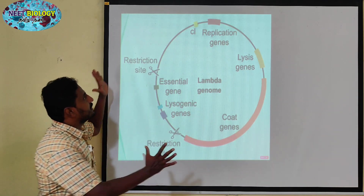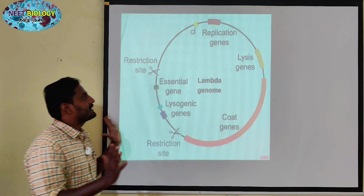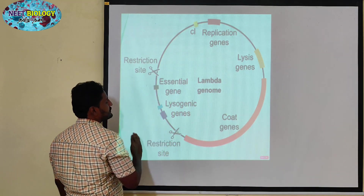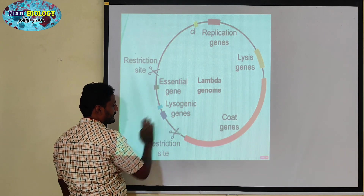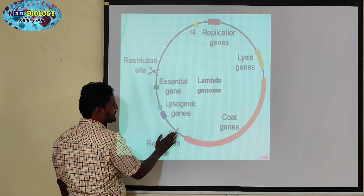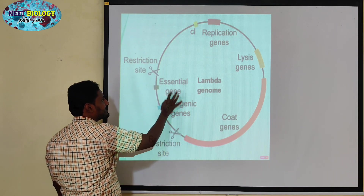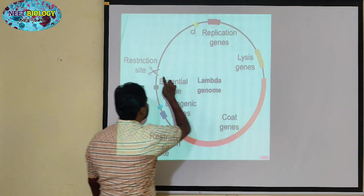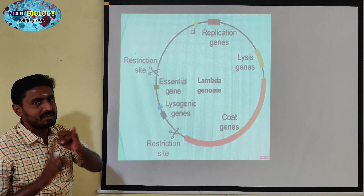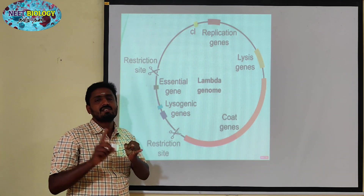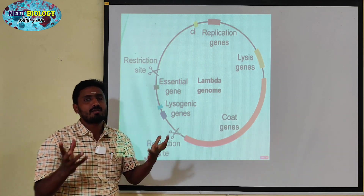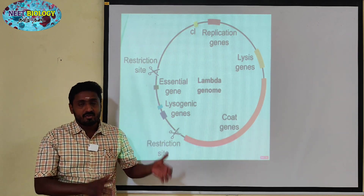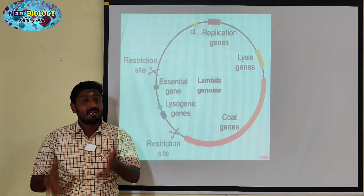This is the main nature of the lambda genome. It contains essential genes, lysogenic genes, restriction sites, and replication genes. Because it has restriction sites and replication genes, it can automatically be used as a recombinant vector — that is, the bacteriophage can be used as a vector.